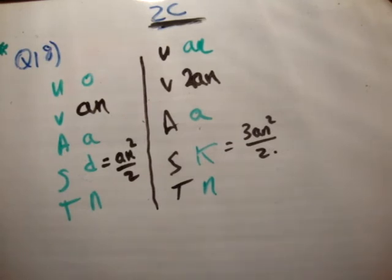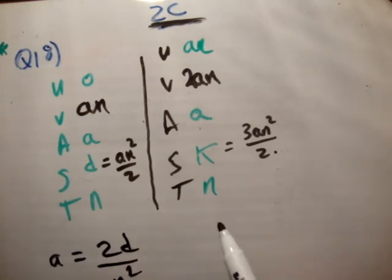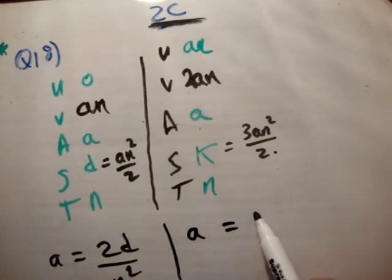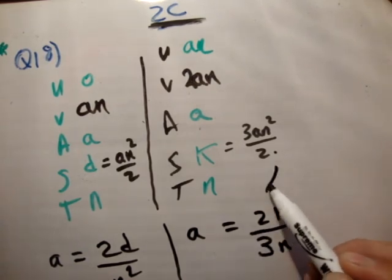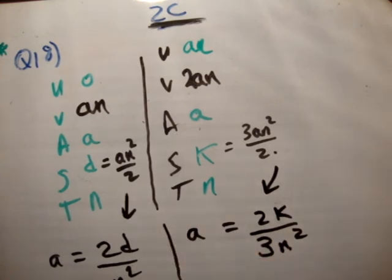So, what we should be able to do is show that we will be able to manipulate them. So, first of all, get a in terms of everything else. So, we'll say a is equal to 2d over n squared. And we know that a over here is equal to 2k over 3n squared. Like that.